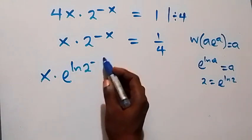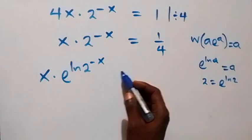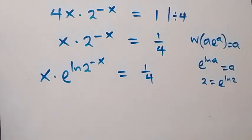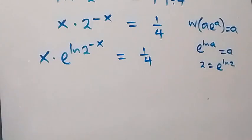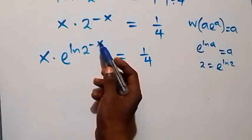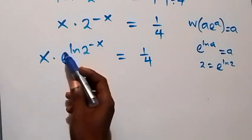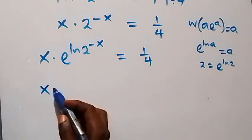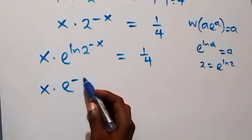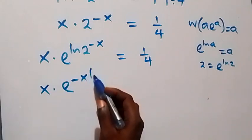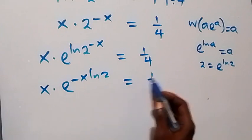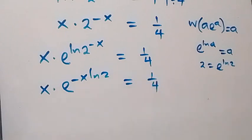Then here we have x times e^(ln 2) raised to power minus x, which equals 1 over 4 on this side. From the law of logarithms, this power here can come to the back, and here we have x times e^(minus x ln 2) now equals to 1 over 4.